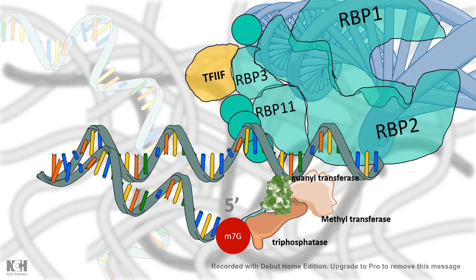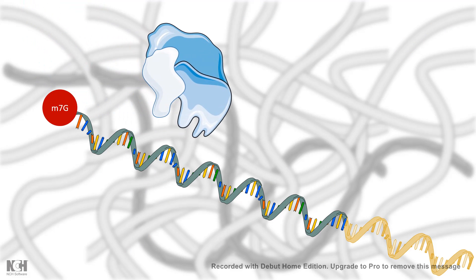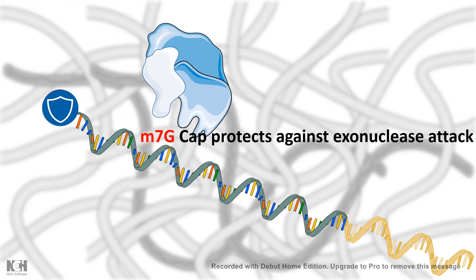We should try to understand the significance of this capping process. It turns out the M7G cap protects the RNA from any kind of nuclease attack, mostly the exonuclease attack.